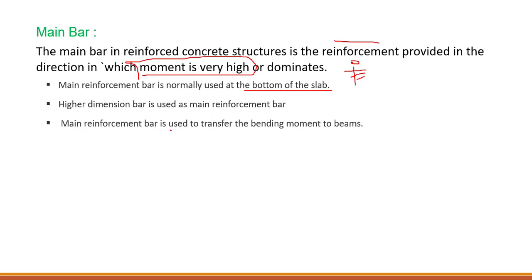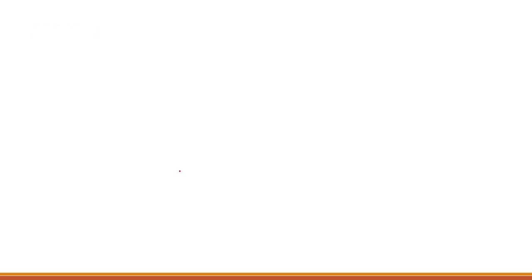The main reinforcement bar is used to transfer the bending moments to the beams. You can see over here we have these bars at the bottom — these are basically the main bars, and these are the distribution bars. The diameter of the main bars will be greater than the distribution bars.